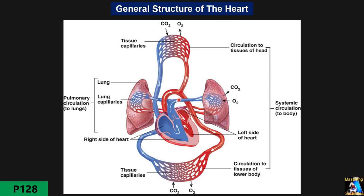In the lungs, the blood is oxygenated and returned through the pulmonary veins to the left side of the heart — first the left atrium, then the left ventricle — and finally through the aorta it goes to the systemic circulation. This cycle repeats every second, more or less.